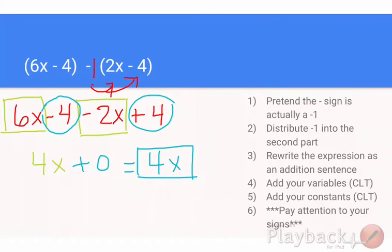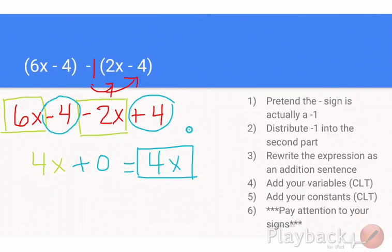Just recapping the steps: I pretended this minus is a negative 1, then distributed the negative 1 into the expression, then rewrote the expression — either as an addition sentence or just as another expression. Then I added my variables: 6x plus negative 2x to get 4x. Added my constants: negative 4 plus 4 to get 0. And paid attention to my signs.